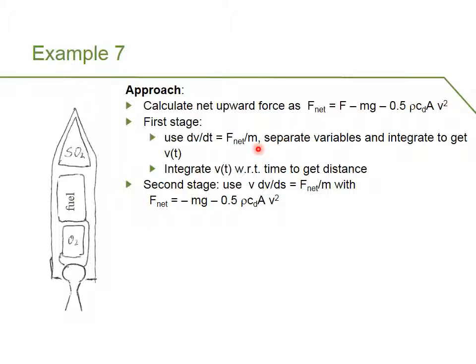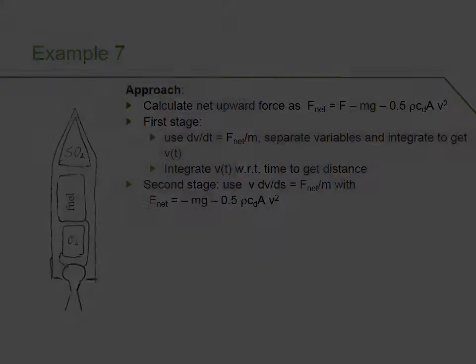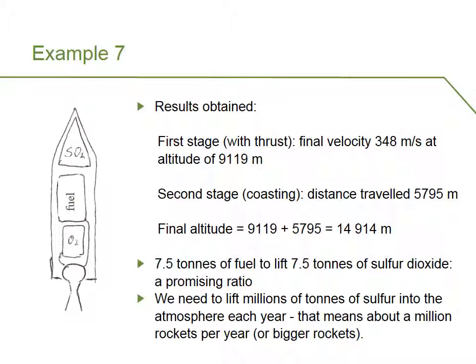Once we have the velocity, we can integrate it with respect to time to get the distance travelled — we will go through this in the tutorial. During the second stage of flight, this is very similar to what we did in the artillery questions. We use the form of Newton's second law: V times dV/ds equals force divided by mass. Here the net force is entirely downwards because there is no thrust — the rocket has run out of fuel — so we have only the weight and drag terms. We will go through this in the tutorial.